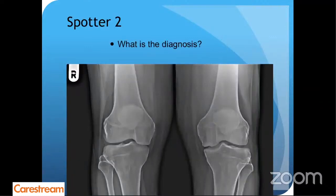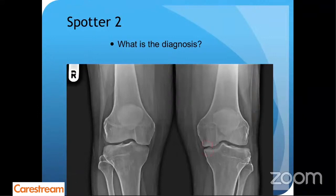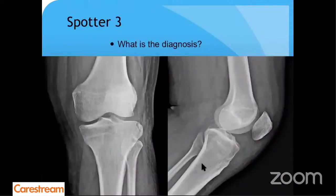Next spotter — 20 seconds. You need your format: medial compartment, lateral compartment. The left knee is involved, so just start looking at the left. This was a subtle finding. This was an OCD of the medial femoral condyle — you can see there is an osseous defect. There was no osseous fragment I could identify. So it was a lateral femoral OCD.